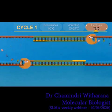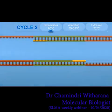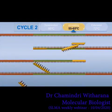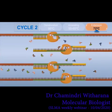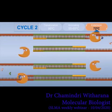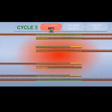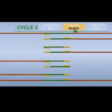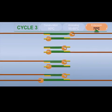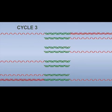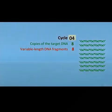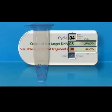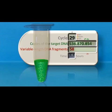Using PCR, copies of a very small amount of DNA sequences are exponentially amplified in many cycles of temperature changes. PCR is a common and often crucial technique used in medical labs and also clinical labs to gain a large amount of DNA starting with a very small amount.